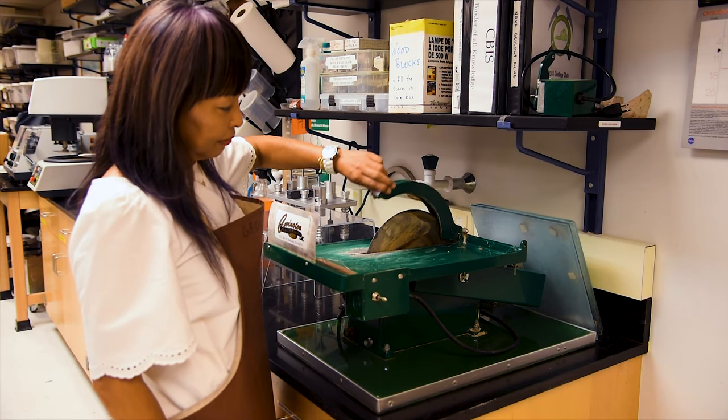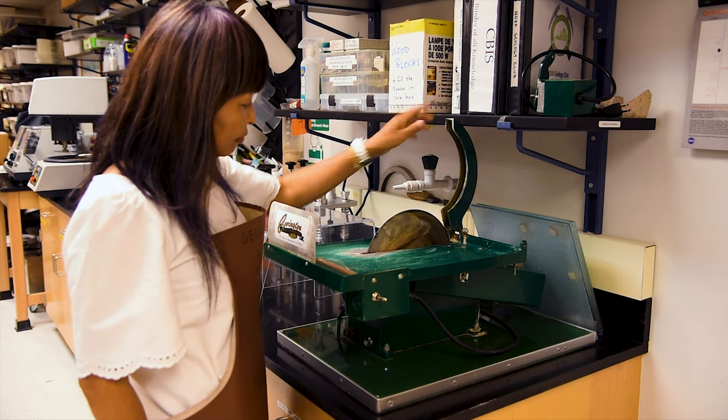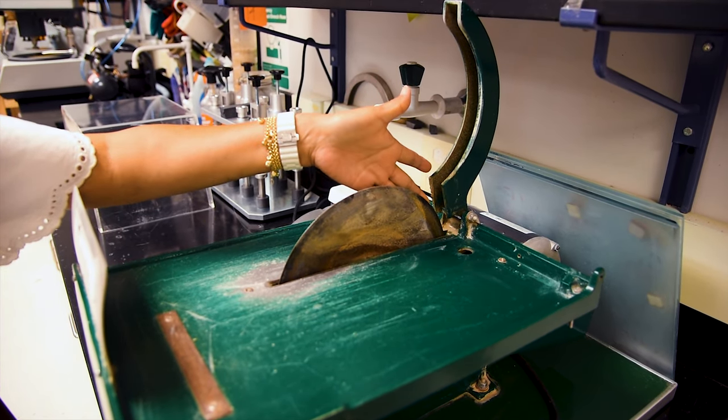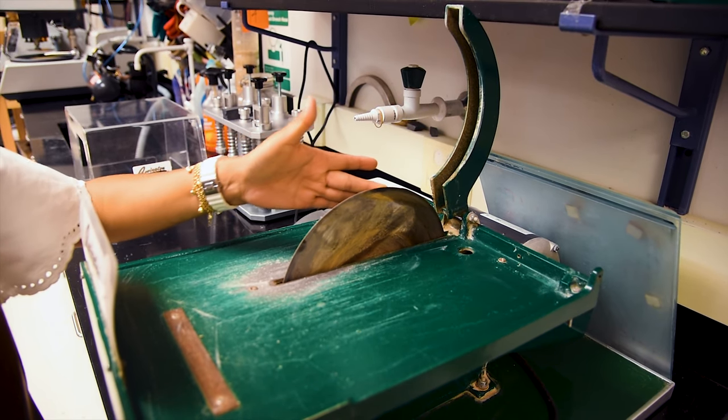The saw blade itself does not have a sharp edge, but a diamond impregnated edge with grooves. This helps increase the cutting rate and the contact of water with the rock sample.